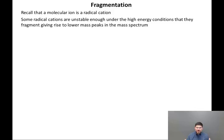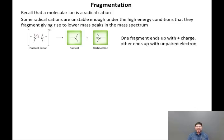Remember also that the radical cation was generated by bombarding a stable molecule with high-energy electrons. The environment inside a mass spectrometer is a highly energized environment. Some radical cations are unstable enough under the high-energy conditions that they fragment, giving rise to lower mass peaks in the mass spectrum.